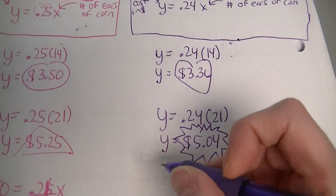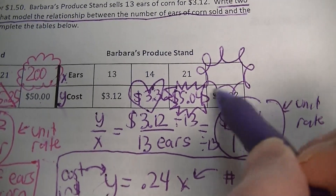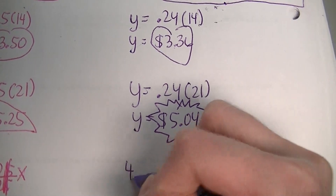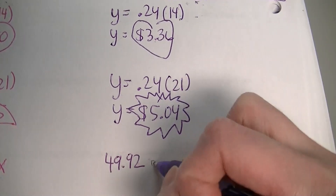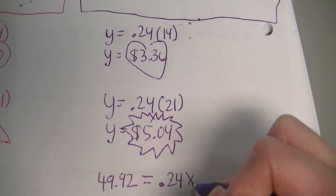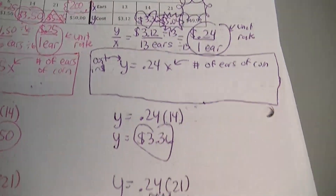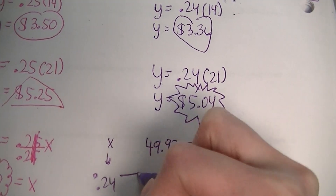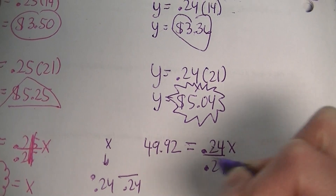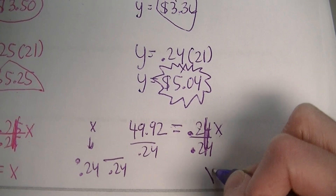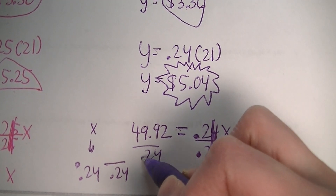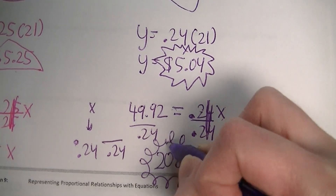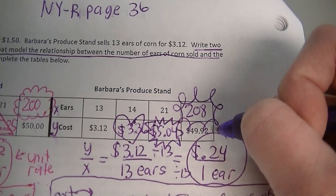For this last one I'll do a loopy shape. We're going to use the equation again, and this time we know the cost — it's $49.92. Since that represents y, we substitute 49.92 in for y: 49.92 equals 24 hundredths times x. X represents number of ears of corn and we don't know that, so we keep it a variable. The inverse operation of multiplying by 24 hundredths is dividing by 24 hundredths, so divide both sides. 24 hundredths divided by 24 hundredths is 1, and 49.92 divided by 24 cents is 208. So 208 ears of corn would cost $49.92. Don't put a dollar sign there because that represents ears of corn, not money.